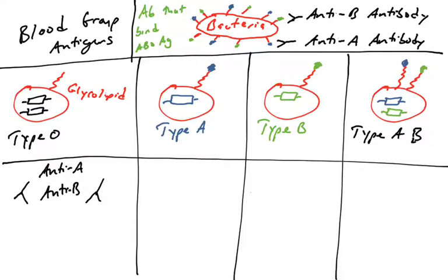So a type O person will generate an antibody response and will have both anti-A and anti-B antibodies in their bloodstream, derived from exposure to these commensal bacteria. A type A person, when exposed to this bacteria, will recognize the B antigen and make anti-B antibodies. But the A antigen looks just like their own antigen — A is self — so they do not generate anti-A antibodies. They tolerate the A glycolipid and only produce anti-B antibodies.